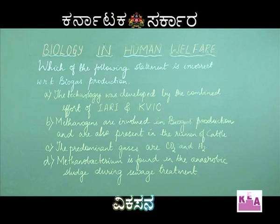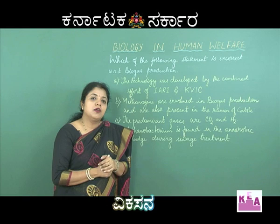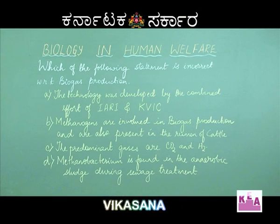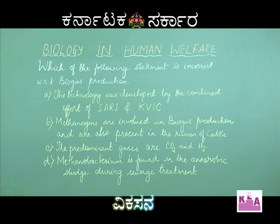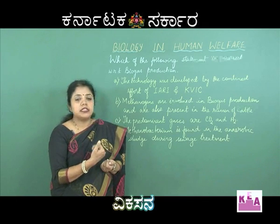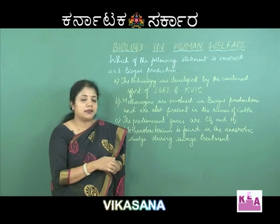Statement A is correct — biogas or gobar gas production technology was indeed developed by the Indian Agriculture Research Institute (IARI) and Khadi and Village Industries Commission (KVIC). Statement B is correct — methanogens belong to Archaebacteria, are present in the rumen of cattle, and are found even in dung of cattle.